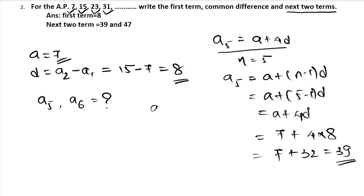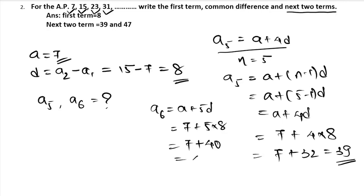The sixth term will be A plus 5D, which is 7 plus 5 times 8, that is 7 plus 40, which is 47. So the next two terms of the AP are 39 and 47. You can directly use the nth term formula to find any term once you know A and D.